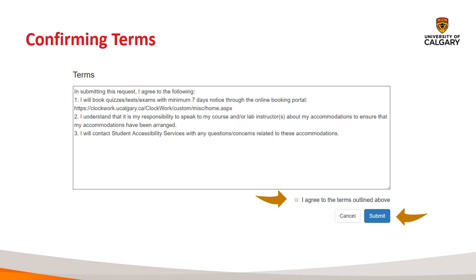Now we're at the last step: confirming that you've read and understood the terms. A key reminder is that you need to book your quizzes, tests, and exams at least seven days in advance. In fact, if you've indicated no changes to your accommodations, you can book all your exams for the entire semester right after hitting submit, using the book exams option at the beginning screen. We also want to highlight the importance of connecting with your instructor to discuss accommodations and how they'll work in your class. And remember, contact us if you have any questions or concerns related to your accommodations.